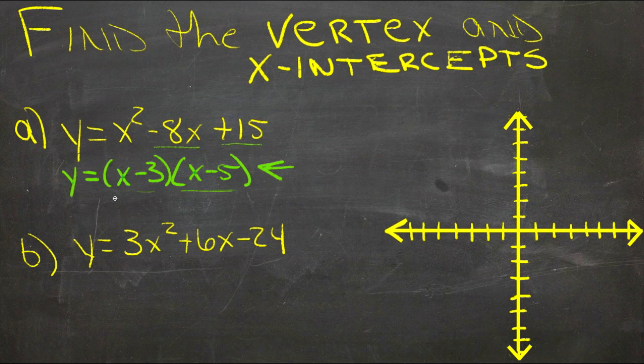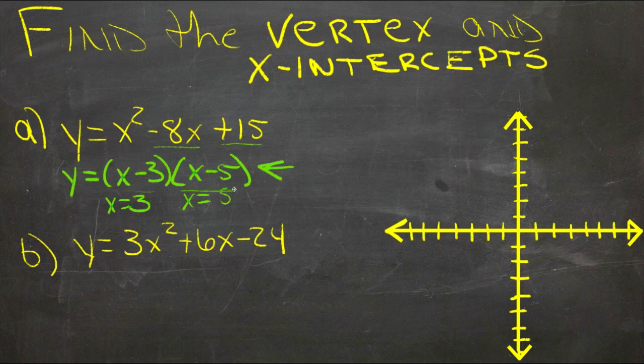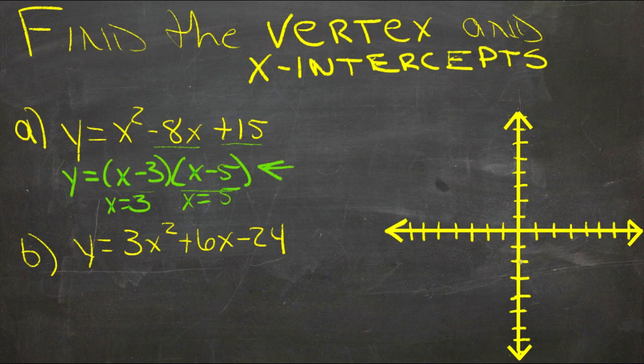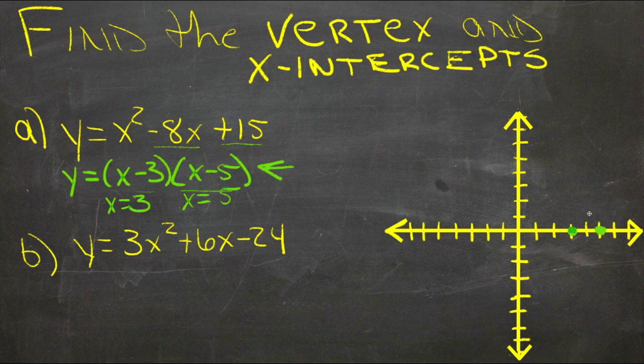So our first point here would be x equals 3. 3 minus 3 is 0, and x equals 5 is the other one. 5 minus 5 is 0. So then we have two points already. We know that y equals 0, so there's no up or down. And x equals 3 and x equals 5. So we can see that we have two points right here. And we can also tell, based on the fact that they're pretty close together, that we're already pretty close to our vertex or our turnaround point.